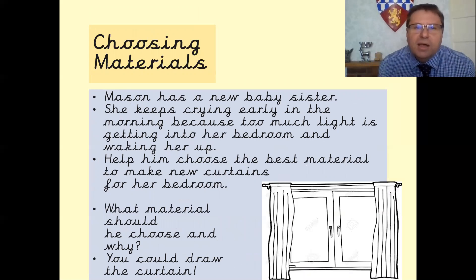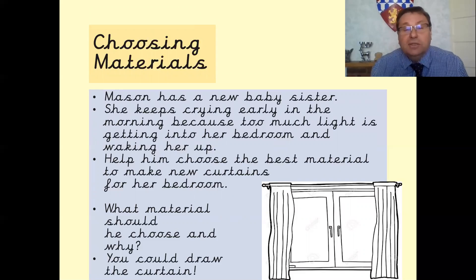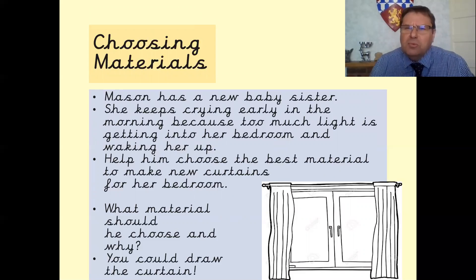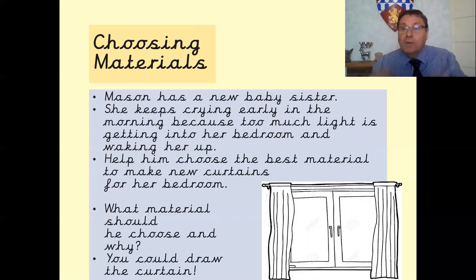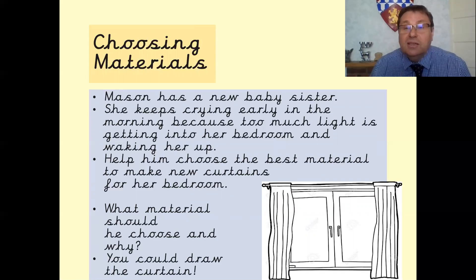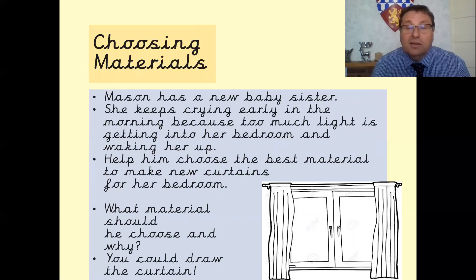So you may have heard that Mason in Pankhurst class has got a new baby daughter, so here's an exercise for you to do. She keeps crying early in the morning because there's too much light getting into her bedroom and waking her up. What I want you to do is think about the kind of materials you could best choose to make some new curtains for her bedroom. Would you use opaque, translucent or transparent? Maybe you could draw a picture of the curtains, write your design and note underneath whether they would be opaque, translucent or transparent. Put it up on Tapestry or get your parents to email it to the Year 3 teacher's email address so we can see your work.